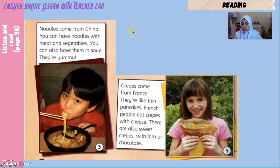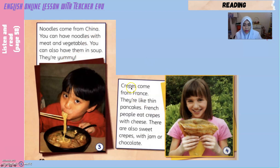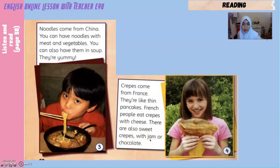Now let's look at the third food: noodles come from China. You can have noodles with meat and vegetables, and you can also have them in soup. They're yummy — yummy means delicious. Lastly, number four, crepes come from France. They're like thin pancakes — thin means nipis. French people eat crepes with cheese. There are also sweet crepes with jam or chocolate.